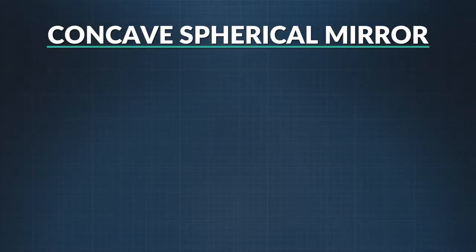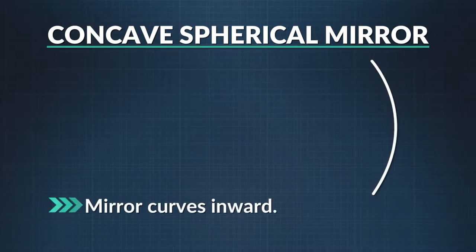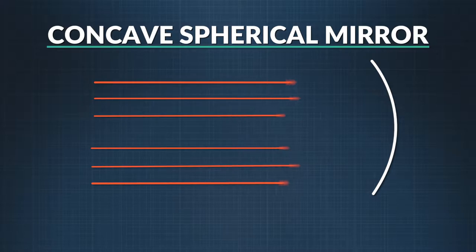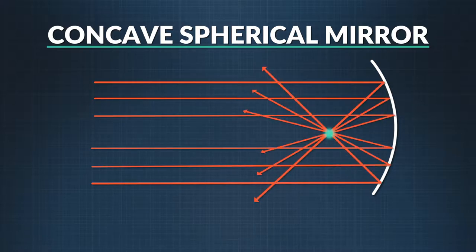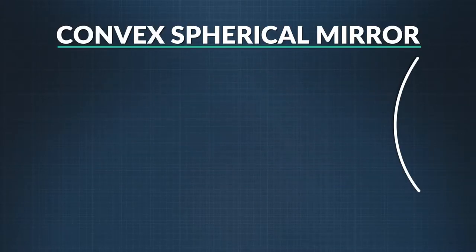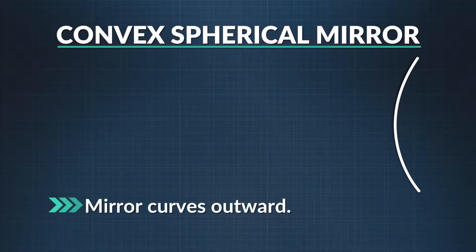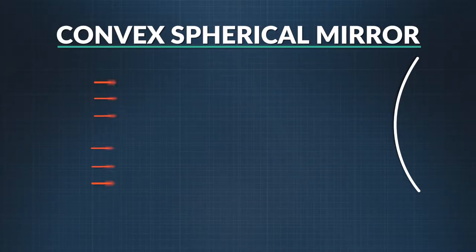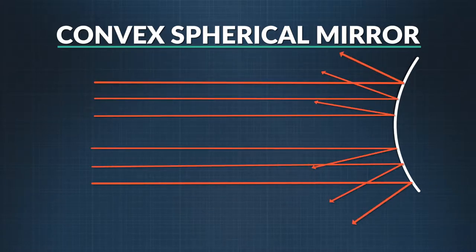Let's look at a diagram of these two kinds of spherical mirrors and how they affect light rays. The first one is the concave one, which looks like this. The curve is inward, like going into a cave. See how light rays come together, or are converging? The second one is convex, where the mirror curves outward. The rays bounce very differently — they spread out, or diverge.